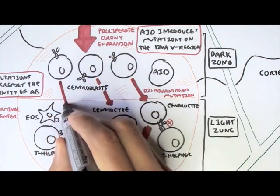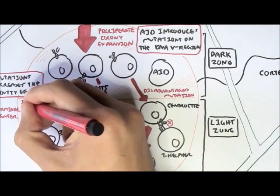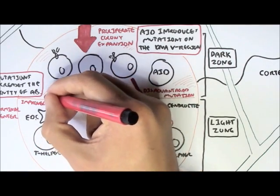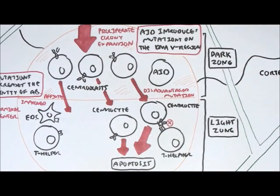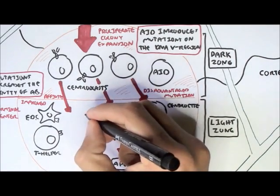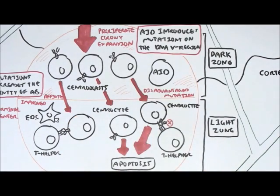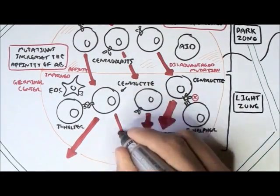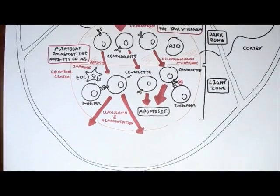However, this particular centroblast had an improved affinity through hypermutation. And so, as it moves to the light zone and becomes a centrocyte, it recognizes the antigens from the T helper cell or the follicular dendritic cell. And so the body would want to produce more of this particular centrocyte because it had improved affinity. And so this particular centrocyte will undergo a process called class switching and differentiation.